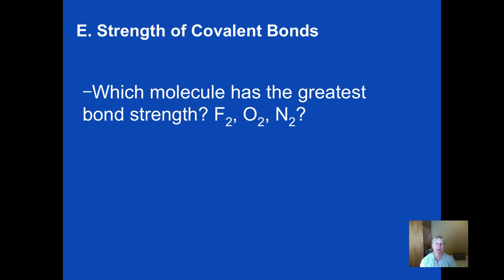So if we go back to this question now again you would have to be able to know how to draw Lewis structures which we're currently practicing. Fluorine single, oxygen double, nitrogen triple. Which do you think is the molecule that has the greatest bond strength? And of course you'd be right if you picked nitrogen with its triple bond.